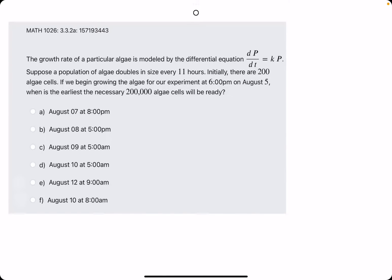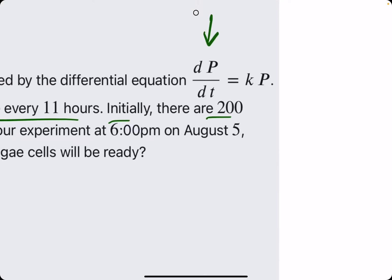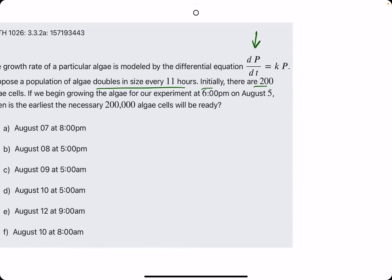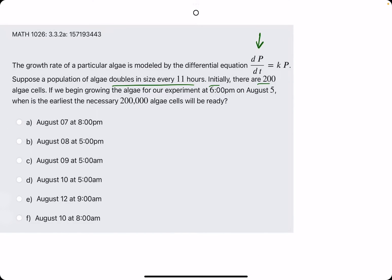Okie dokie. In this problem, they give us the growth rate of some algae modeled by this differential equation. They say it doubles every 11 hours. Initially, there are 200. And so right away, we see the differential equation, which we'll solve using separation of variables. And they tell us it doubles in size every 11 hours.